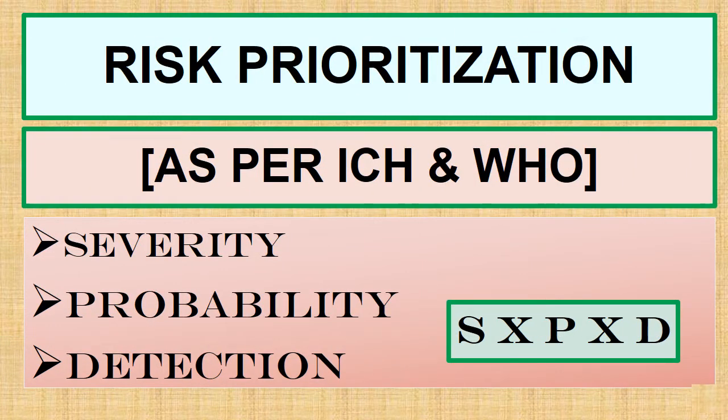In this 5-minute presentation, we will see risk prioritization as per the ICH and WHO requirements. We will revisit the concept of severity, probability, and detection. At the end, we will see one classic example for risk prioritization.